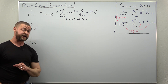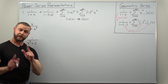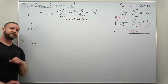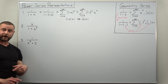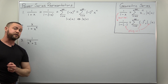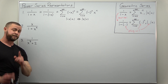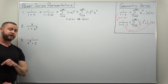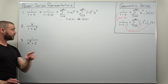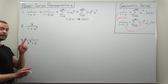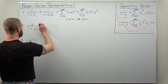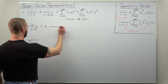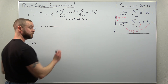The trick — rewriting addition as minus a negative — will be used in the other problems as well. Problem two has a key difference: we have x squared in the denominator and also a power of x in the numerator.